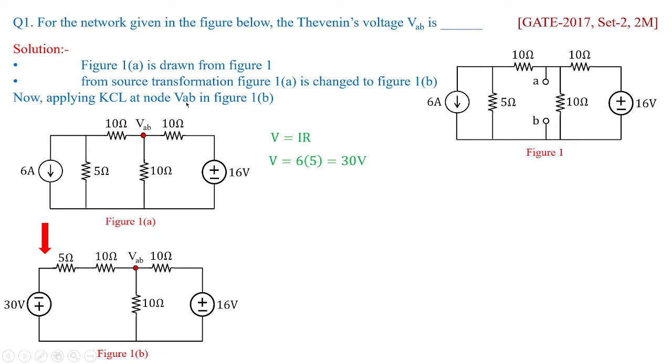Now applying KCL at node VAB in figure 1B. So you can check our previous videos how to obtain the node voltages for a given particular problem. Anyhow, here we are going to apply KCL at this node and we are going to get VAB plus 10 by 15 plus VAB by 10 plus VAB minus 16 by 10 which is equal to 0, thus satisfying the KCL.